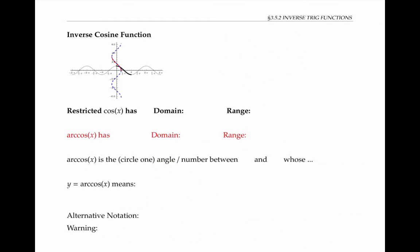Let's go through the same process to build an inverse cosine function. We start with a graph of cosine of x and flip it over the line y equals x to get the blue dotted line. But the blue dotted line is not a function.